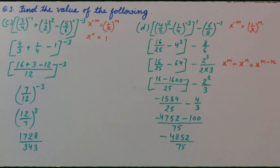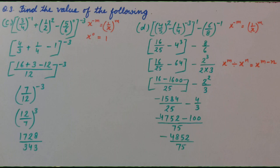(4/5) whole raise to the power 2 — we will open the bracket and solve it. It is 16 upon 25. Minus — because power is negative, we will reciprocate the base — 4 raise to the power 3, whole raise to the power 1. If we write power 1 or not, it doesn't matter. Minus 8 upon 6.